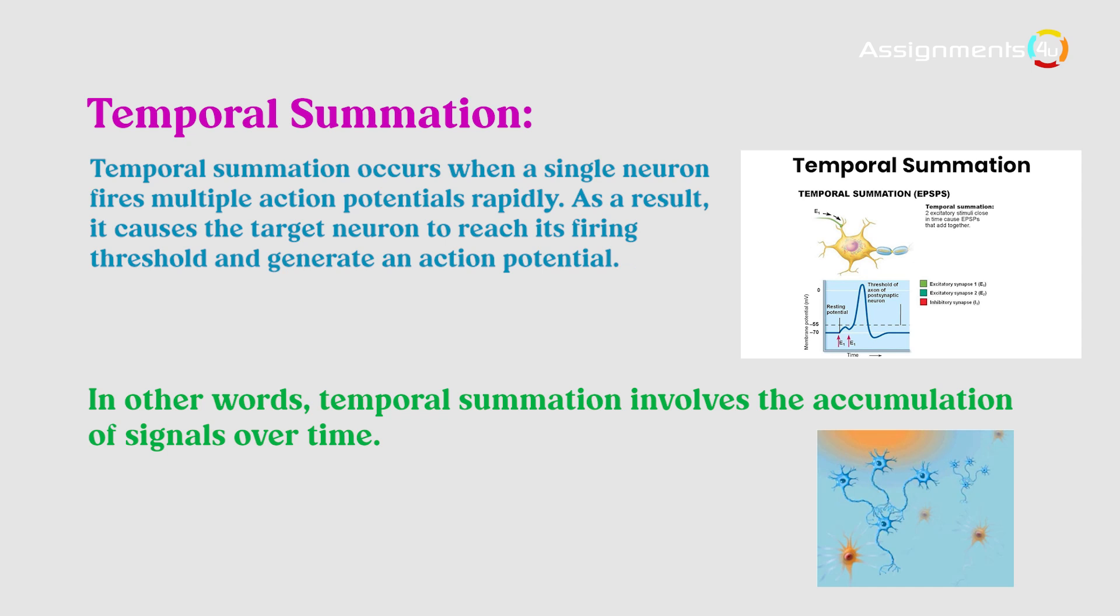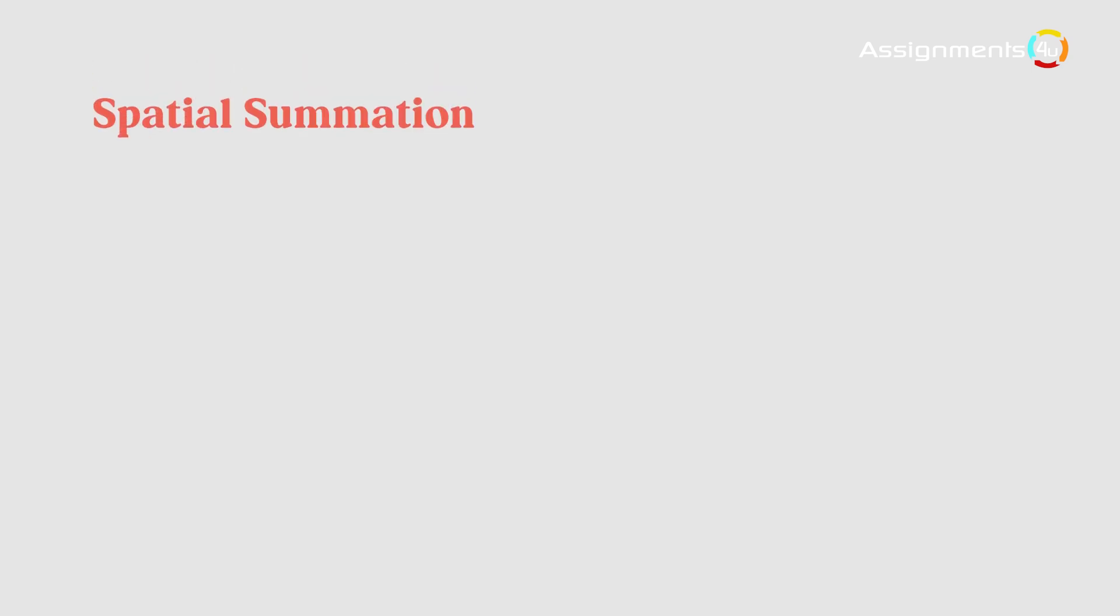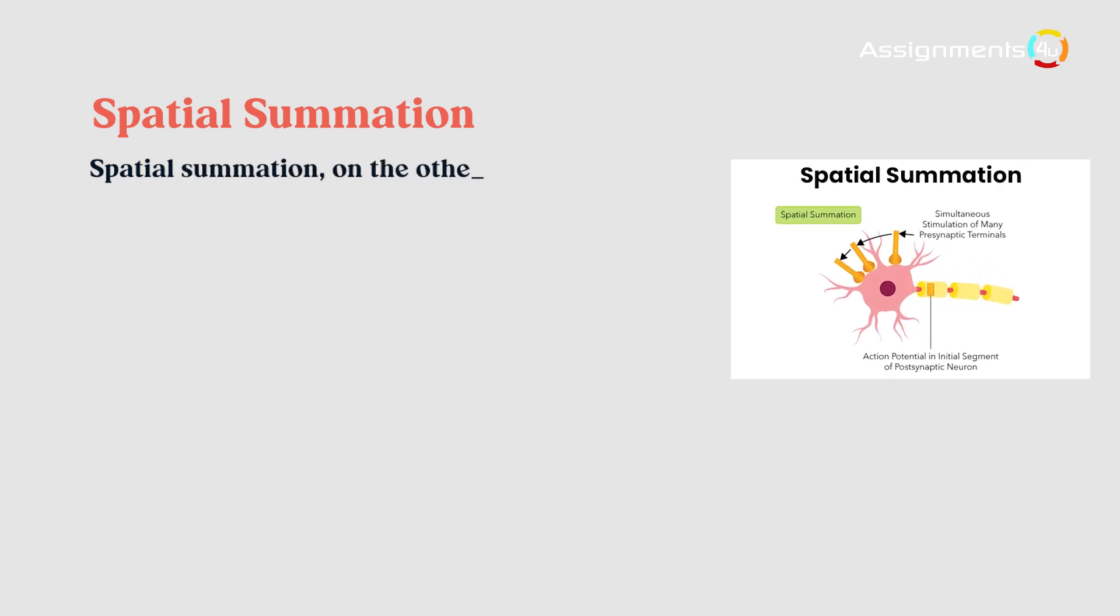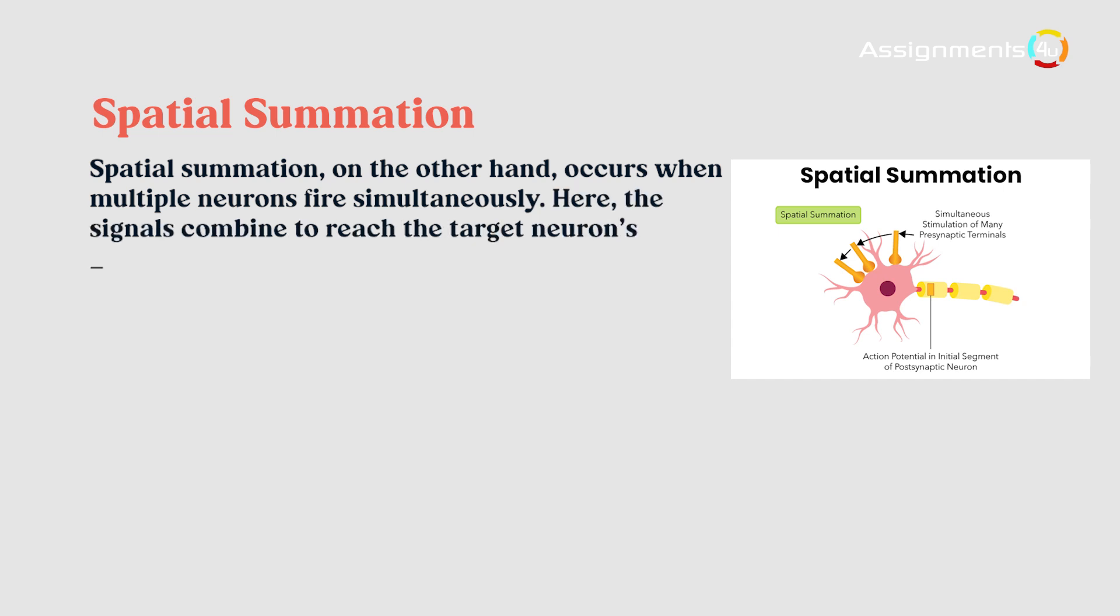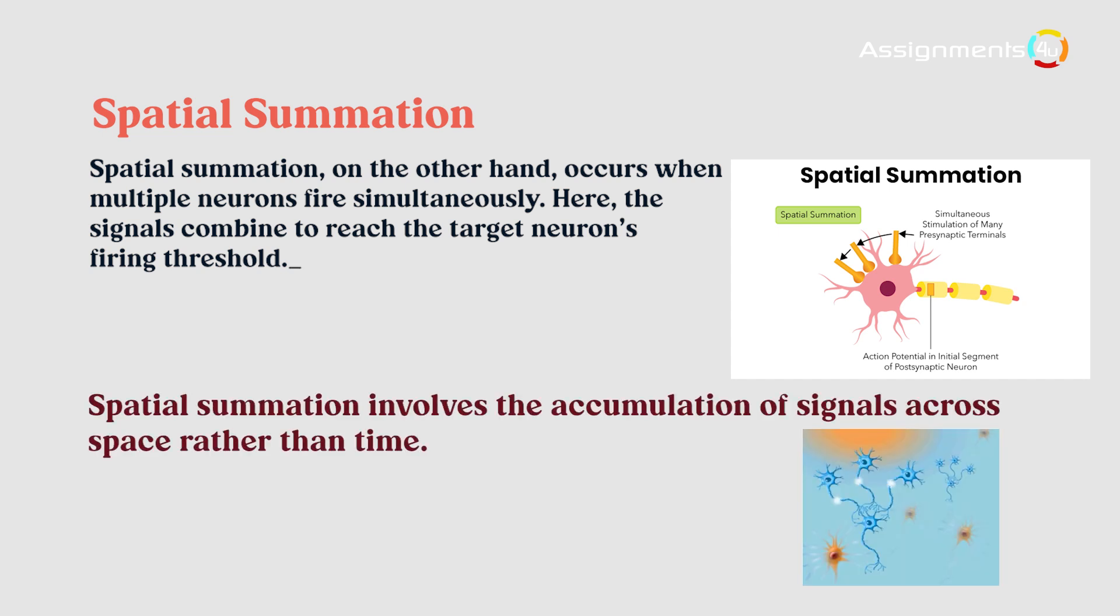Spatial summation, on the other hand, occurs when multiple neurons fire simultaneously. Here, the signals combine to reach the target neuron's firing threshold. Spatial summation involves the accumulation of signals across space rather than time.